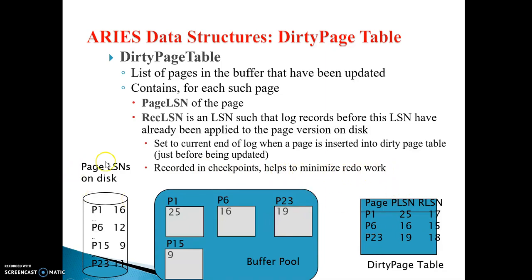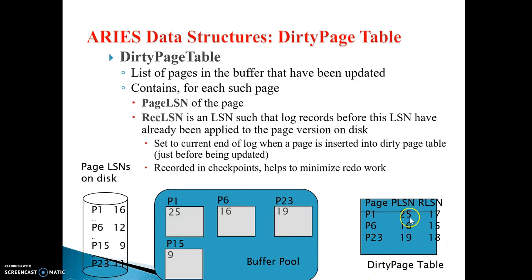Looking at Page LSN on disk, different pages are shown: P1, P6, P15, P23, and so on. The entire buffer pool is divided into different pages — P1, P6, P23 — each containing different possibilities. The dirty page table contains the page number, PLSN (previous LSN), and RLSN (RecLSN) numbers, which it maintains.